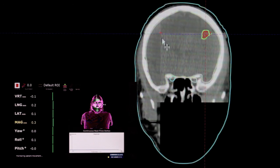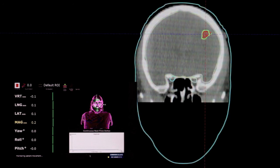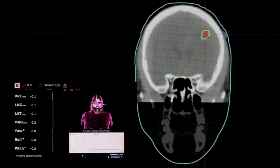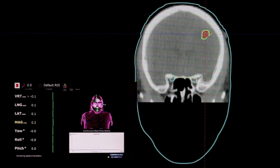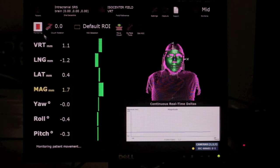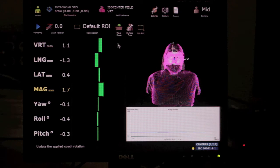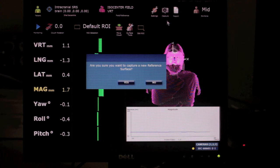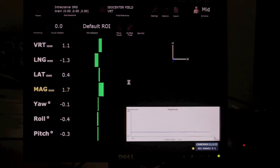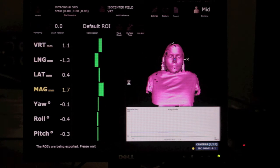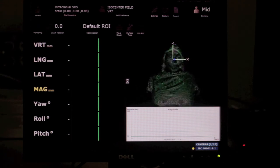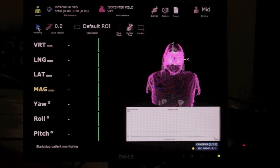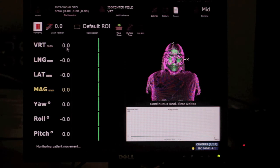The next step we need to follow is to create a new reference image for AlignRT to track. This will effectively calibrate AlignRT to the cone beam CT corrected patient position. This involves quickly pausing the monitoring and capturing a new reference surface. Once that new surface is acquired, we can immediately resume patient monitoring.